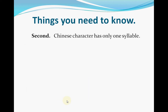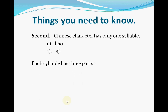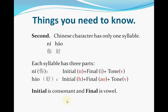The second thing you need to know is that each Chinese character has only one syllable, and each syllable has three parts. For example, 你 has an initial part — n, a final part — i, and a tone. Put together it becomes: 你. 好 has an initial — h, a final — ao, and a tone, making it: 好. You may notice that the initial is a consonant and the final is a vowel.